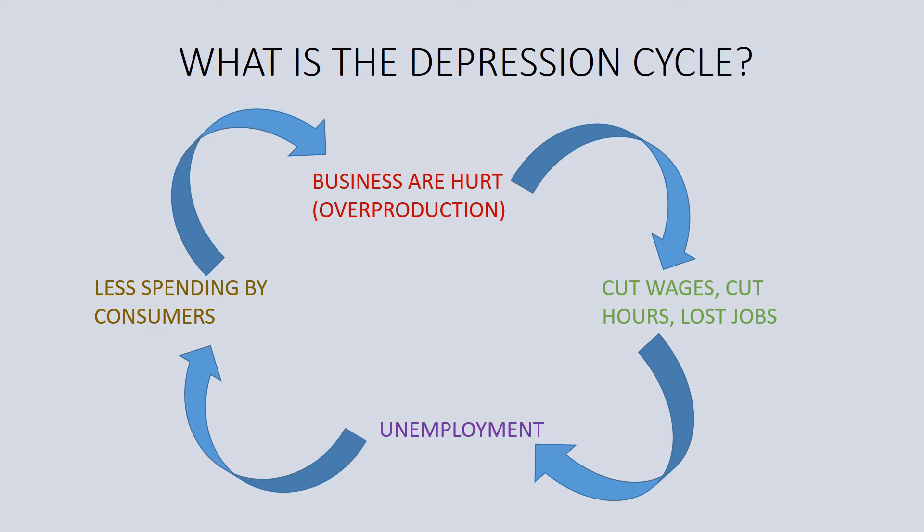Eventually these cycles will correct themselves, but in a depression it usually takes quite a while, and a lot of people suffer because of it. This is the cycle we plunged into during the 1930s — very difficult to reverse.